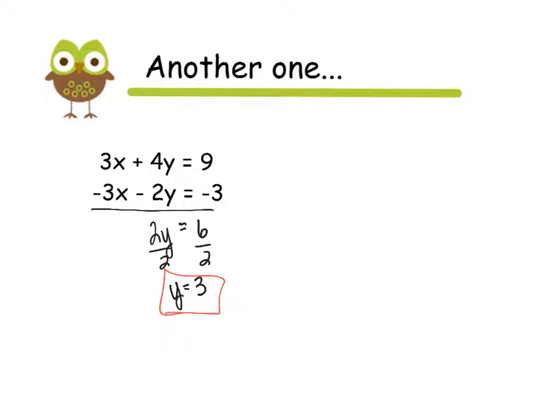Now that I know what y is, I can plug it back in and solve for x. I'm going to use the top equation again. I think that's what we did in class. So I have 3x plus 4 times, we know y is 3, equals 9. So let's simplify. We have 3x plus 4 times 3 is 12, equals 9.